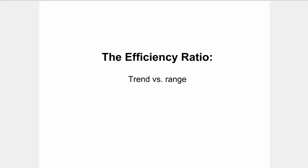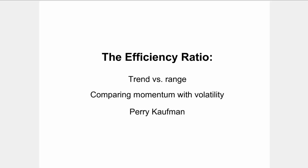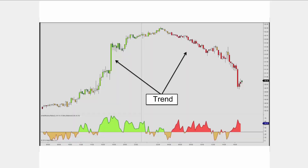The efficiency ratio determines whether a market is trending or range bound by comparing momentum with volatility. This concept was developed by Perry Kaufman and it's an alternative to the directional movement and ADX indicators.